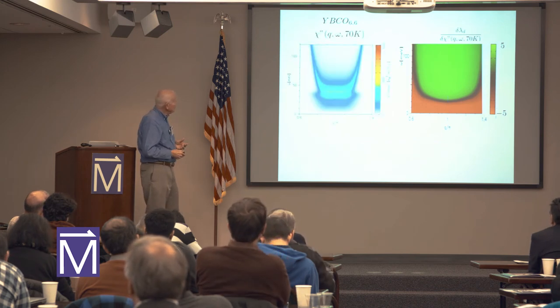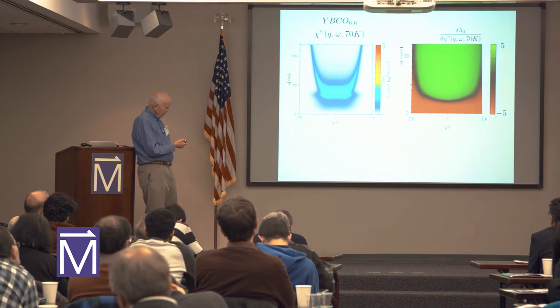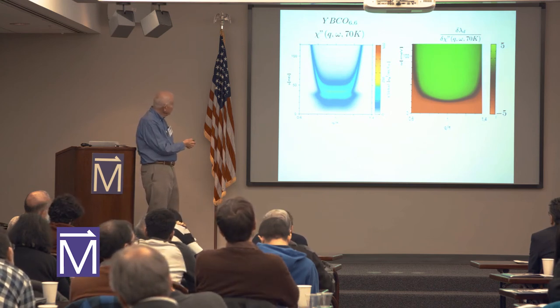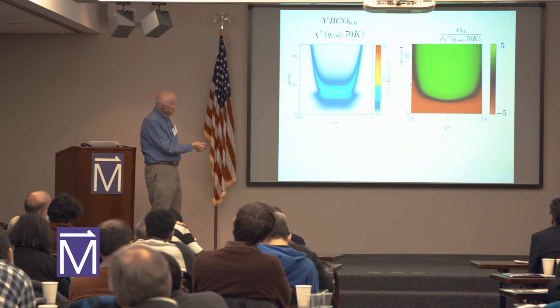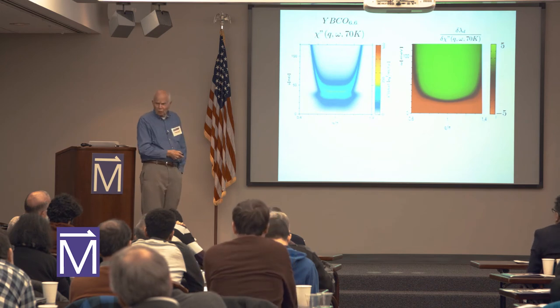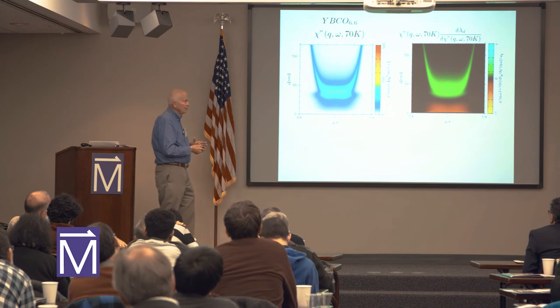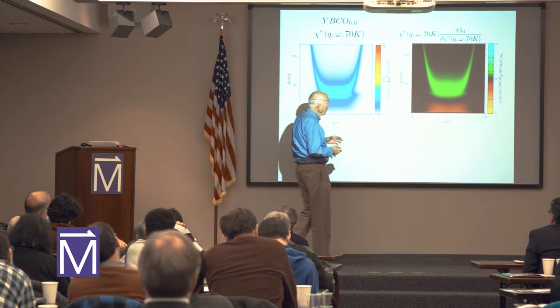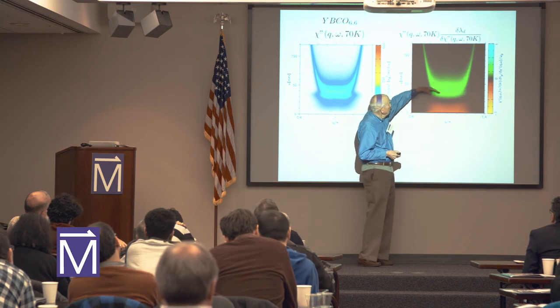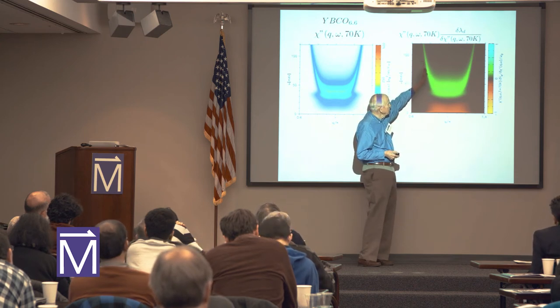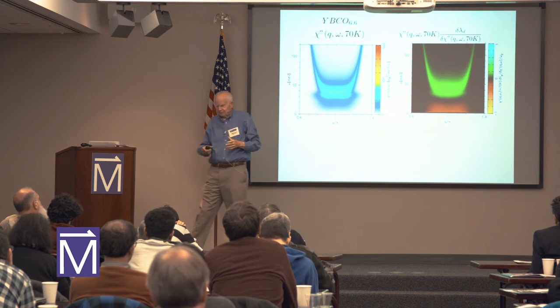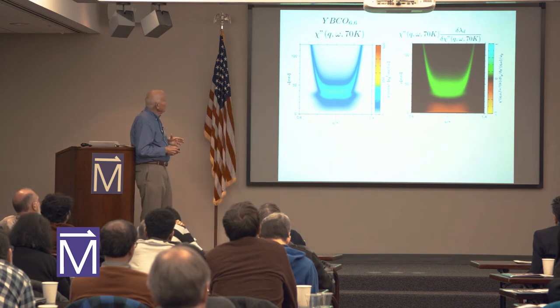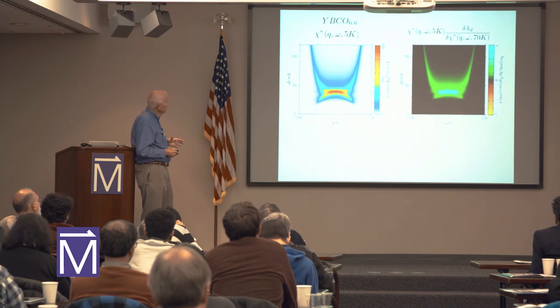Now you can imagine taking the inelastic neutron scattering data of Hinkov at 70 Kelvin and laying it in to get an idea of what's happening with respect to where it could help you. What you see is, within this model, what's helping you are low-lying spin fluctuations. They of course continue up. This is just the weight of the spin fluctuations and gives you an idea of what's happening with momentum transfer.